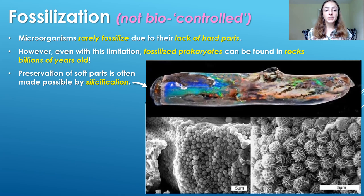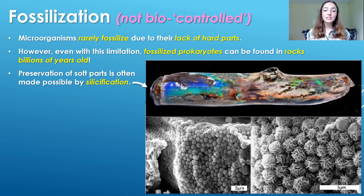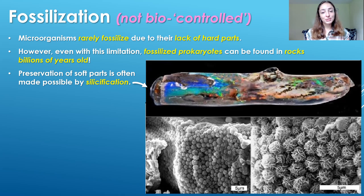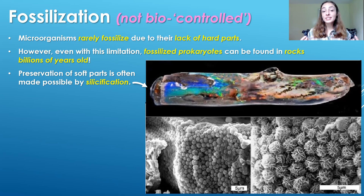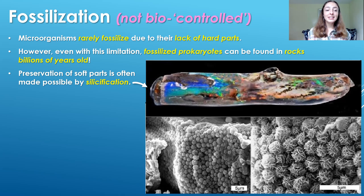In terms of what becomes fossilized, typically those are organisms that have hard parts — macro organisms like invertebrates with shells or skeletons can become preserved relatively easily if subject to rapid burial. But microorganisms rarely become fossilized because they don't typically have hard parts. We did see exceptions where microorganisms produce calcite shells or silica shells like radiolarians and diatoms. However, prokaryotes don't typically do these mineral-producing processes, so they don't have hard parts and are really hard to find in the rock record — yet fossilized prokaryotes have been found in Precambrian rocks billions of years old.